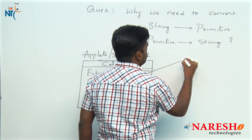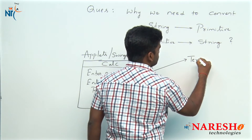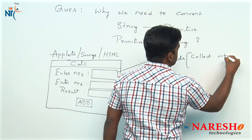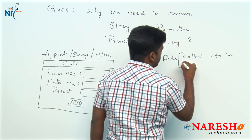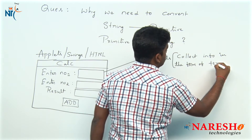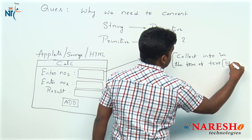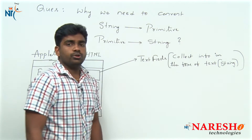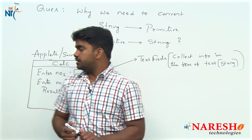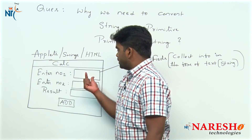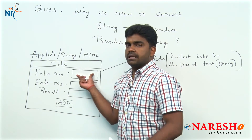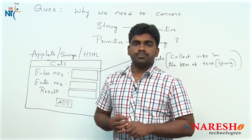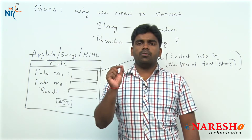These are text fields. Text fields collect the information in the form of text. What is text? Simple — it is a string. Whatever input you give — whether character, integer, double, or string type — no matter, it will be collected in the form of a string only, in every technology.